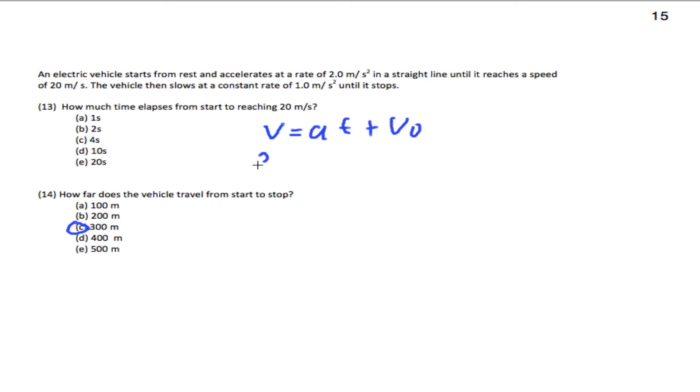And so I have 20 equals 2 times t plus 0. And that's why I'm getting t equals 10 seconds.